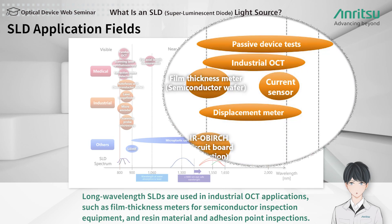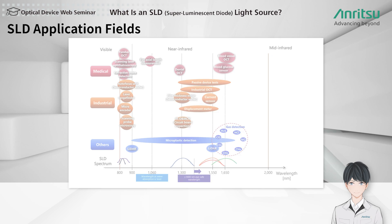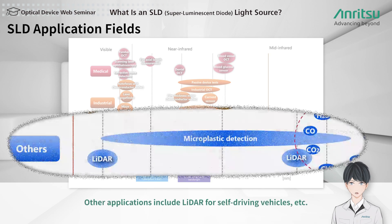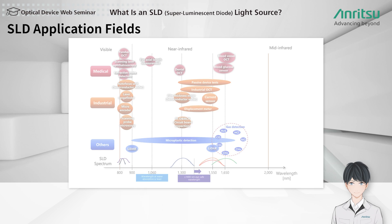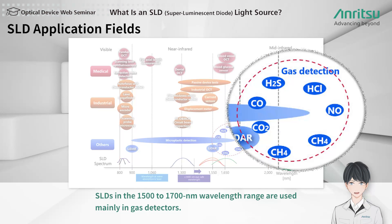Long wavelength SLDs are used in industrial OCT applications such as film thickness meters for semiconductor inspection equipment and resin material and adhesion point inspections. Other applications include lidar for self-driving vehicles. SLDs in the 1500 to 1700 nm wavelength range are used mainly in gas detectors.